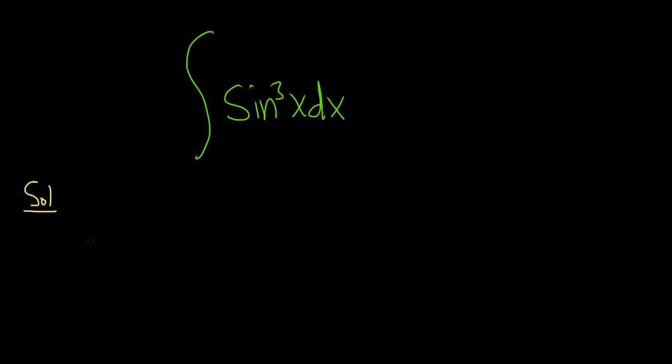In this case, we have sine cubed, so we can save a copy of sine. And so by save a copy, I basically mean we can factor out a sine from sine cubed and write it like this: sine squared x times sine x.